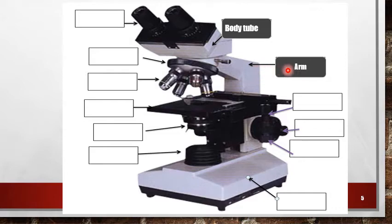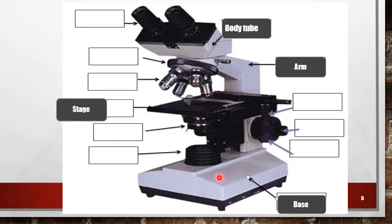The second part is the body or arm, used for holding of the microscope. The third part of the mechanical body is called base or foot, used for standing or supporting of the microscope.